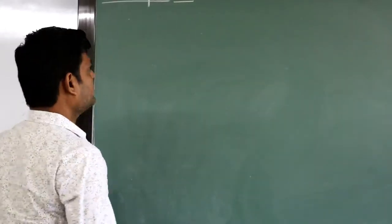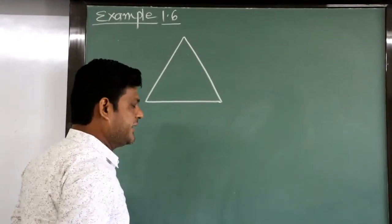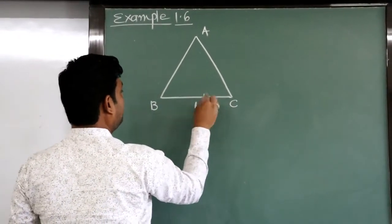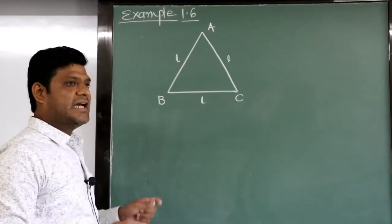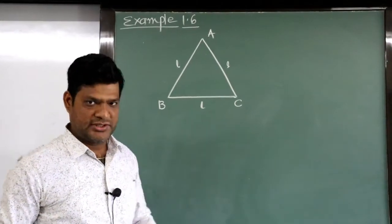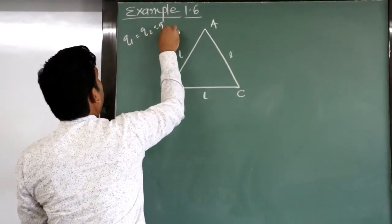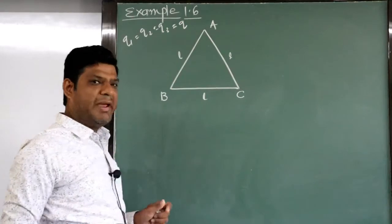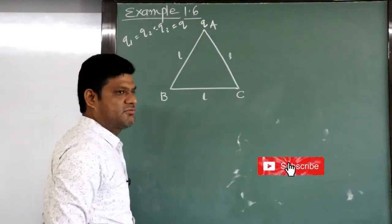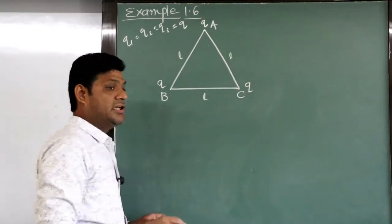The question given in our textbook: an equilateral triangle is given with vertices A, B, C having side length L. Charges are kept on the vertices — Q1, Q2, and Q3 — where Q1, Q2, Q3 are all equal to Q, so the magnitude of all the charges is the same. The charge on each vertex is Q.